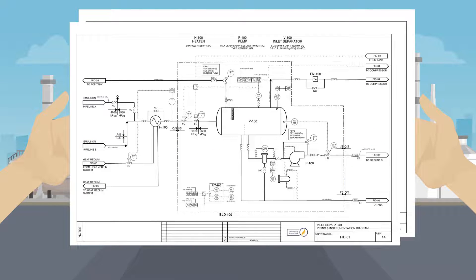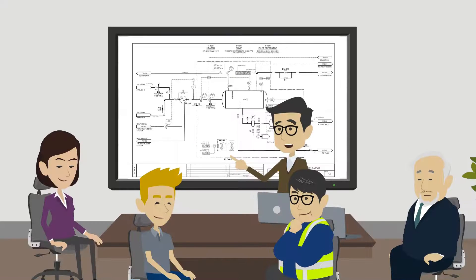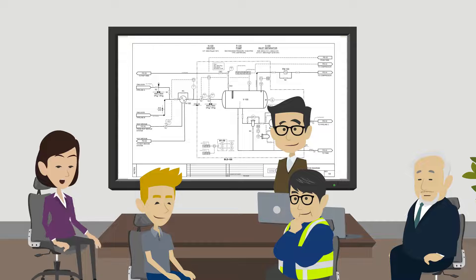A PNID also shows piping specifications and instrument details. PNIDs are used in HAZOPs as a way to understand the process and identify potential hazardous modes of failure in the system.